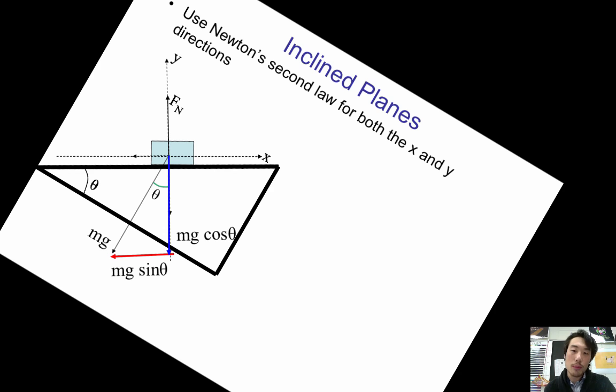Now, we're going to use Newton's second law for both the x and y direction. As a refresher, Newton's second law is the net force is equal to the mass times the acceleration. So for the net force along the x axis, we have to take a look at all of the forces that are along the x axis. So we have F equals ma, that's Newton's second law.